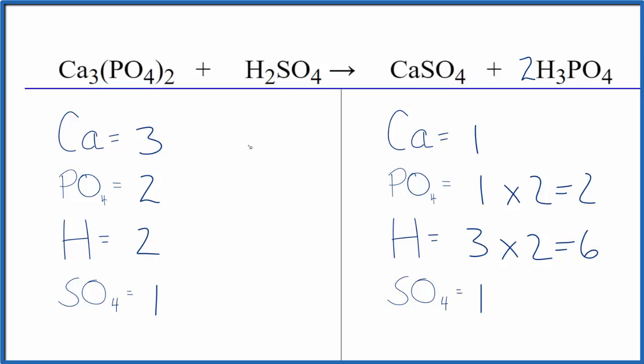Why don't we put a three in front of the calcium sulfate? One times three. That'll give us three calciums. Those are balanced. Then the sulfates, we have the whole sulfate here. One times three. That gives us three sulfates.